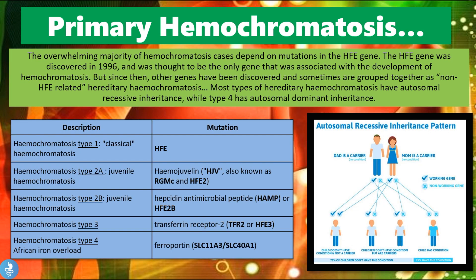The overwhelming majority of hemochromatosis cases depend on mutations in the HFE gene. The HFE gene was discovered in 1996 and was initially thought to be the only gene associated with the development of hemochromatosis. Since then, other genes have been discovered and are grouped as non-HFE related hereditary hemochromatosis. Most types have an autosomal recessive inheritance pattern, while type 4 has an autosomal dominant inheritance. Primary hemochromatosis can be further subdivided into four main types.